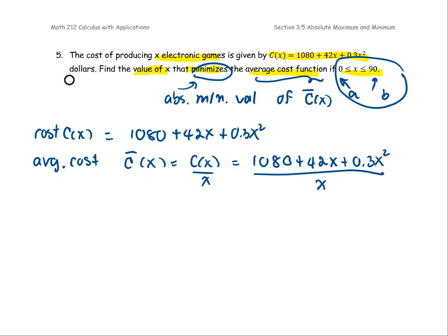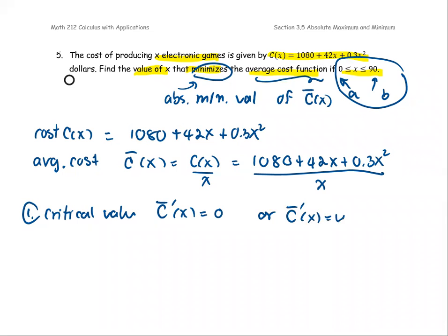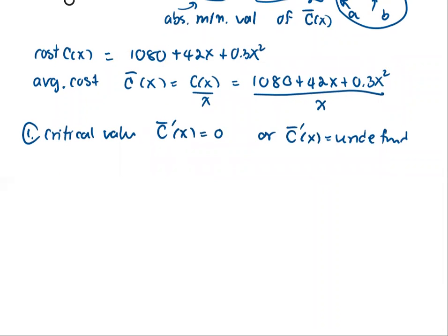Starting with the first step to find the critical value: we find where C-bar prime equals 0 or C-bar prime is undefined — two different cases. Since C-bar is in fraction form, we'll use the quotient rule. We identify the numerator as the 'high' function and the denominator as the 'low' function. The quotient rule formula is: low times d-high minus high times d-low, all over low squared.